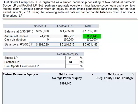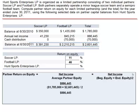For Hunt Sports Enterprises LP, net income $886,445, divided by beginning equity $1,785,000 plus ending equity $2,601,445, divided by 2. $886,445 divided by average partner equity $2,193,223 is a partner return on equity of 40%.